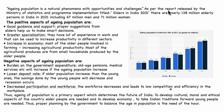As per the report released by the Ministry of Statistics and Programme Implementation titled 'Elders in India 2021,' there are nearly 138 million elderly persons in India in 2021, including 67 million men and 71 million women. The positive aspects of aging population include good guidance and support — proper suggestions from elders help us to make smart decisions.